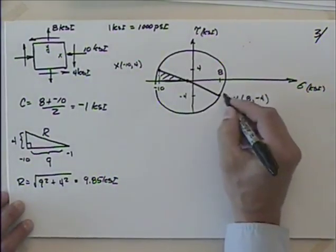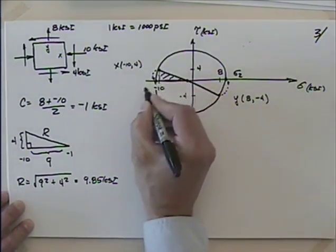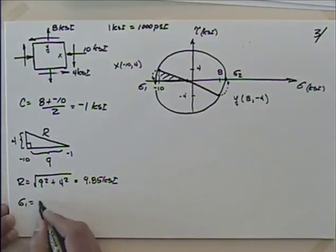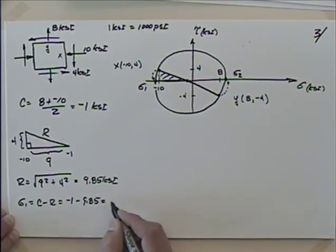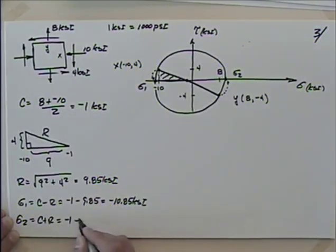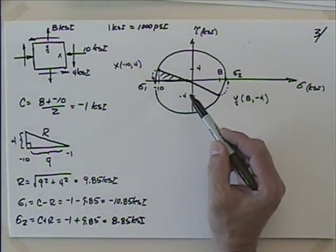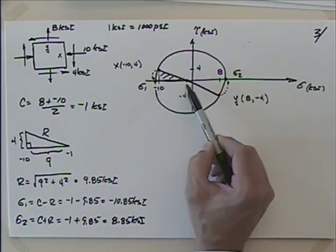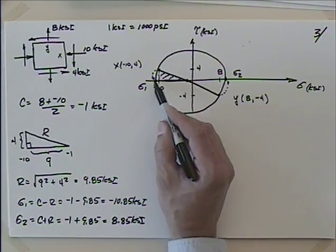For principal stresses, I take y to the closest direction — that's sigma 2 — and take x over to sigma 1. Sigma 1 equals center minus radius: minus 1 minus 9.85 equals minus 10.85 KSI. Sigma 2 equals center plus radius: minus 1 plus 9.85 equals positive 8.85 KSI. If you draw this to a reasonable scale, sigma 2 should be outside and greater than 8, and sigma 1 should be less than minus 10 — and those seem reasonable.